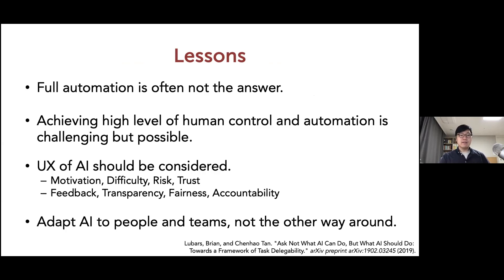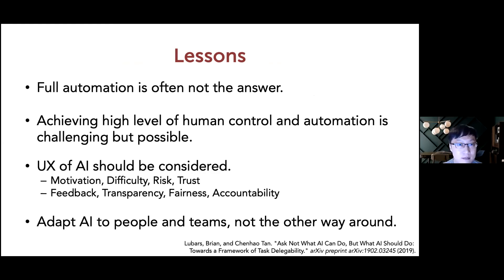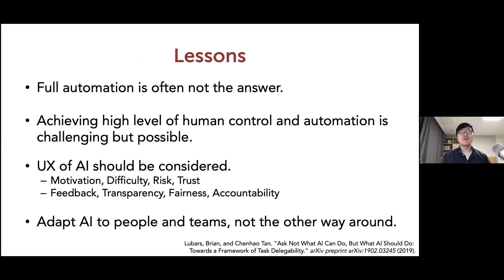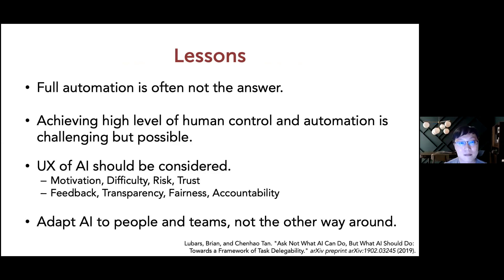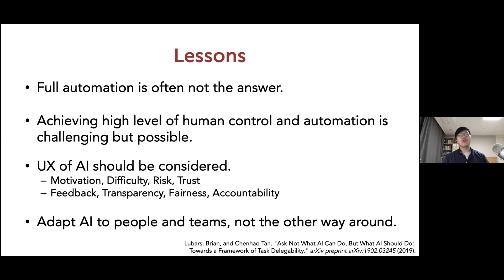Here are my lessons. Full automation is often not the answer, and using Ben's framework of human control and automation, achieving a high level in both is quite challenging. As a community we need better design patterns and guidelines, but I think it's possible. UX of AI is important and should be considered. We need to adapt AI to people and teams, not the other way around. As an analogy — this is Korean-style sushi called kimbap — with AI it's like we have an innovative way of making one ingredient much better, but we need to consider all the other components in order for the holistic experience to make sense. Human-AI interaction should be a first-class object in our design, and as a society we need to train our people to work with AI better.